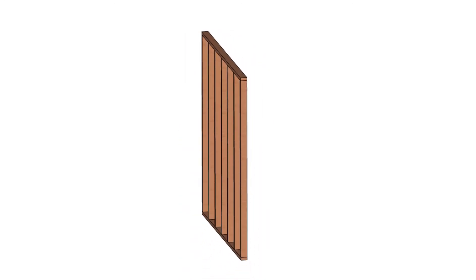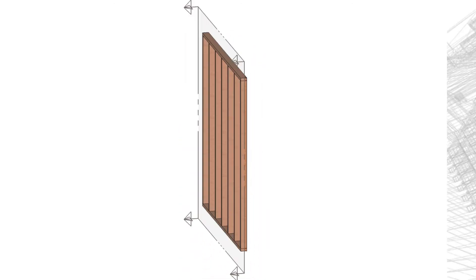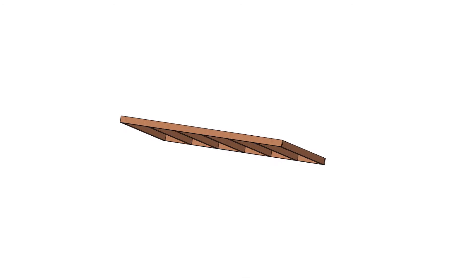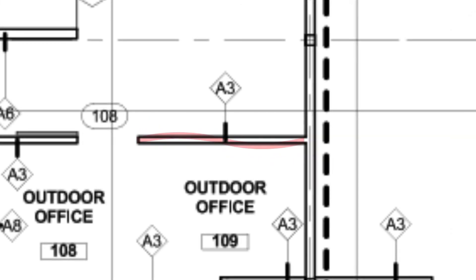Studs are permitted to be 1/4 inch out of plumb in 8 feet. The face of framing members is permitted to be 1/4 inch from a true plane in 8 feet. Plates and runners at the tops and bottoms of wood framed walls are permitted to deviate 1/4 inch from a straight line in 8 feet. And the layout of walls and partitions is permitted to be 1/4 inch from the intended position.